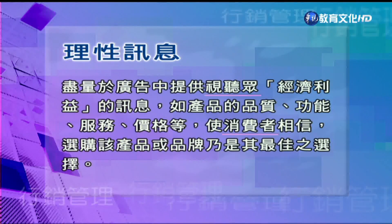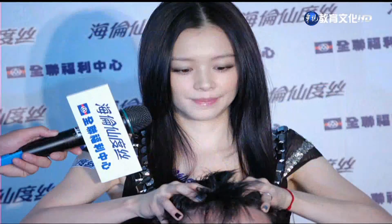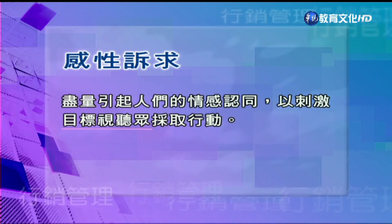接下来第三个步骤就是要拟定信息。确定沟通所要达到的效果之后，我们就要决定到底要说些什么话才能够打动顾客的心，也就是说我们必须拟定有效的信息。信息制作必须考虑到信息的内容跟它的格式。信息内容有各种不同的诉求方式，诉求可以分成三大类：理性诉求是尽量在广告里面去提供一些经济利益的信息，像产品的品质、功能、服务、价格等等，让消费者相信购买这个产品或品牌就是最佳的决策。感性的诉求刚好相反，理性诉求是说之以理，感性诉求则是动之以情。